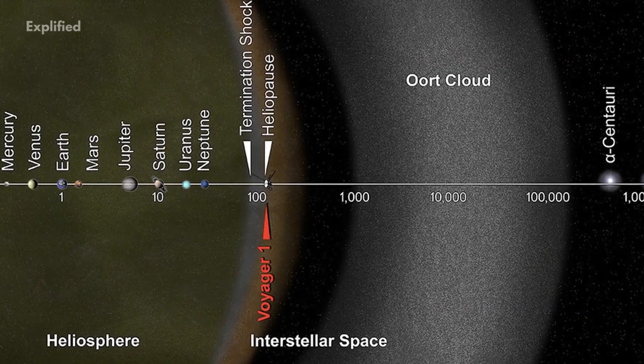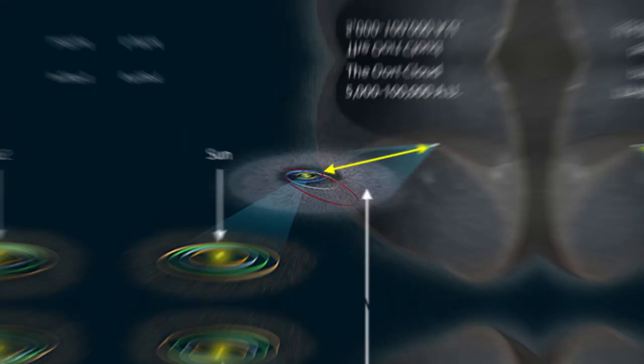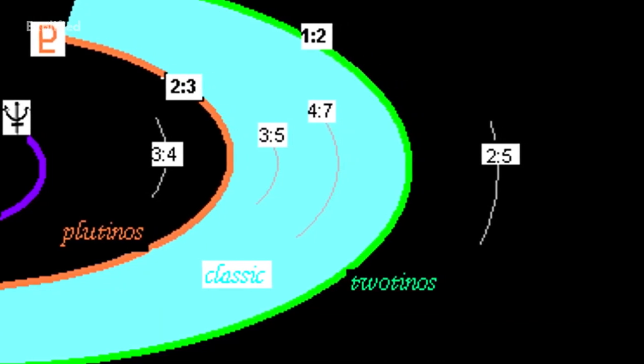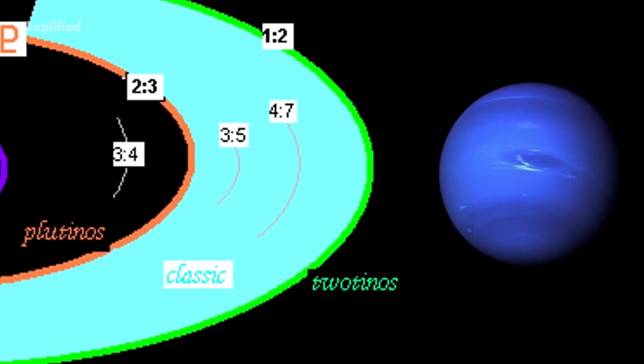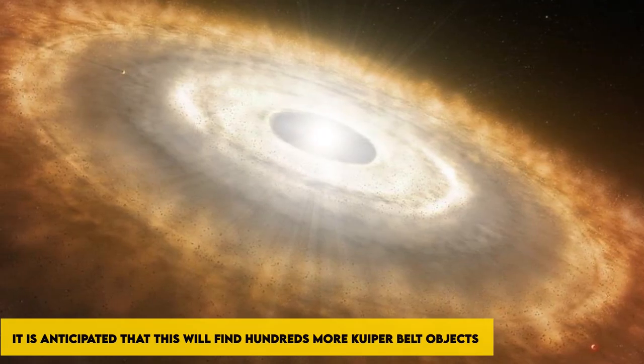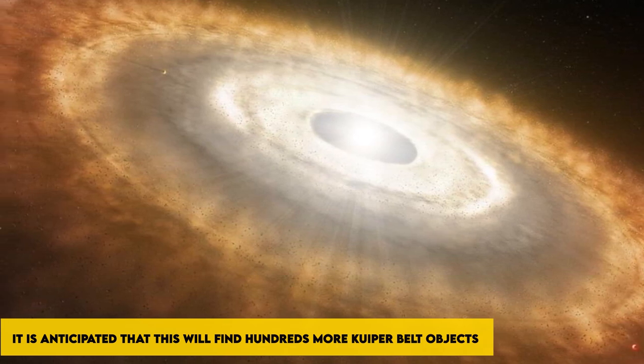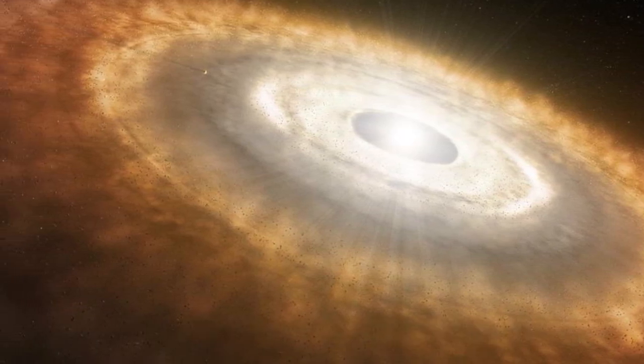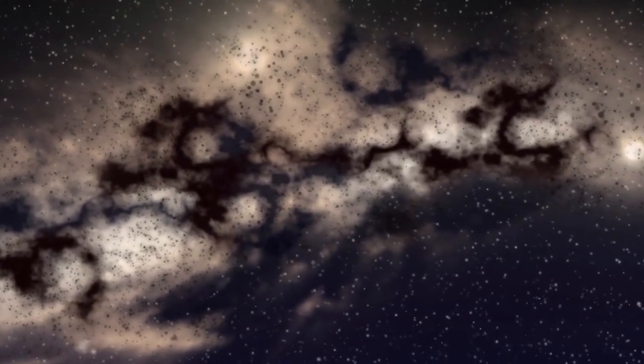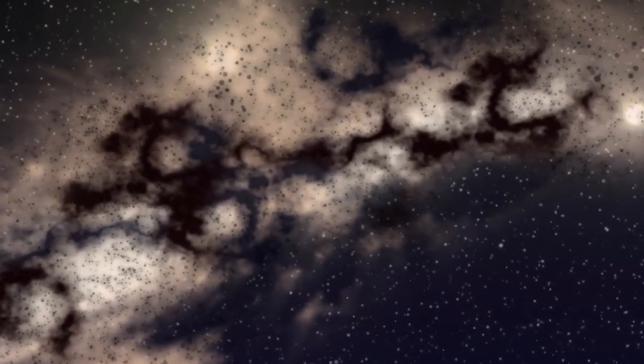For direct observation, the Oort cloud and the predicted position of Planet Nine are both located far too far away. However, a 10-year survey of the sky will start in 2022 at the Vera C. Rubin Observatory in Chile, which went online in 2021. It is anticipated that this will find hundreds more Kuiper Belt objects. It may be possible to confirm or refute the existence of Planet Nine and provide information about its origin and location by closely examining their orbits.